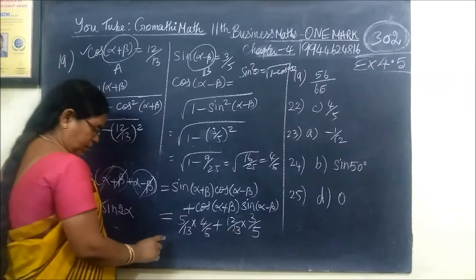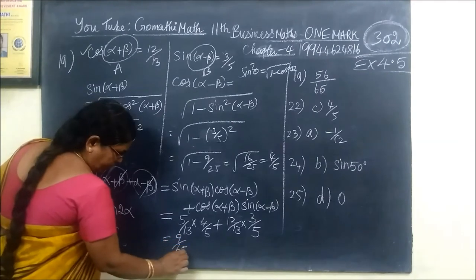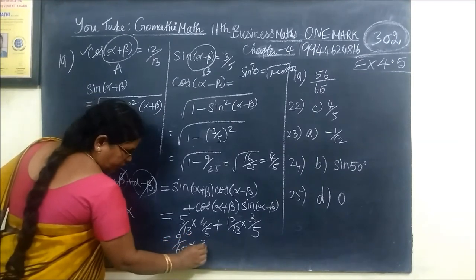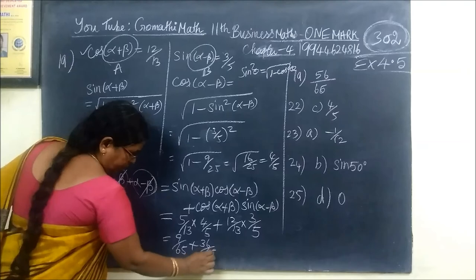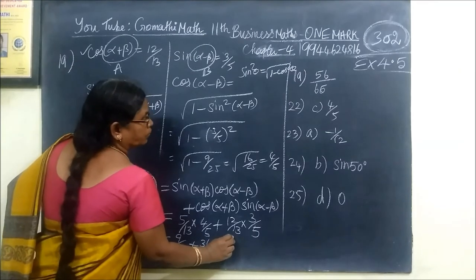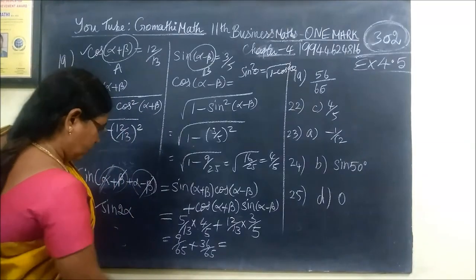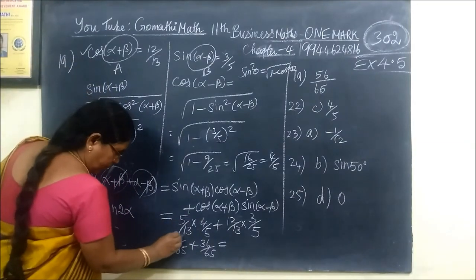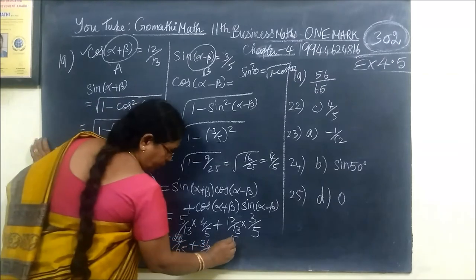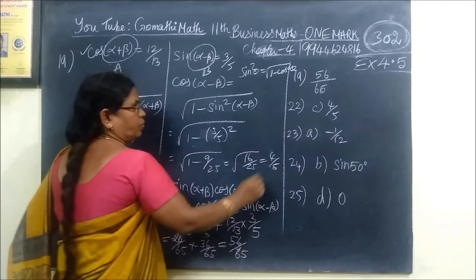Then multiply, 9 by 65 plus 36 by 65. Add and add, 56 by 65. If you add, you are ready. 56 by 65. This is the answer. Correct.